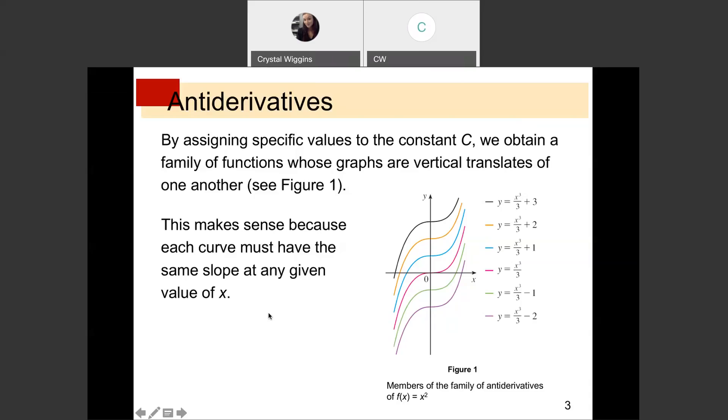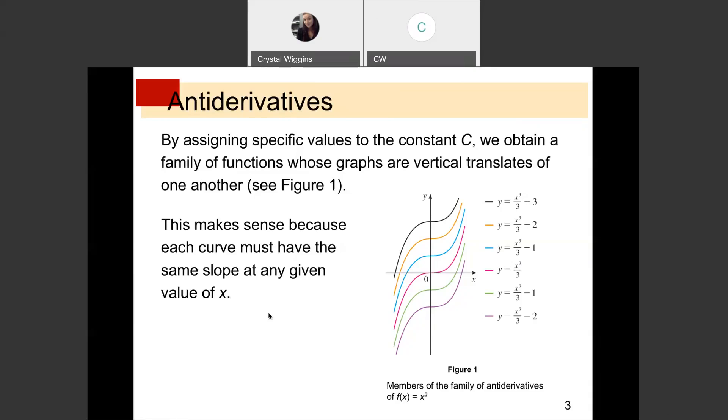By assigning specific values to the constant c, we obtain a family of functions whose graphs are vertical translations of one another. Remember that c is just the y-intercept. We're finding the family of curves that explain that derivative and say that any one of these could work for that derivative. It would depend on our initial value being given in order for us to find c exactly for a particular function. Let's try these.